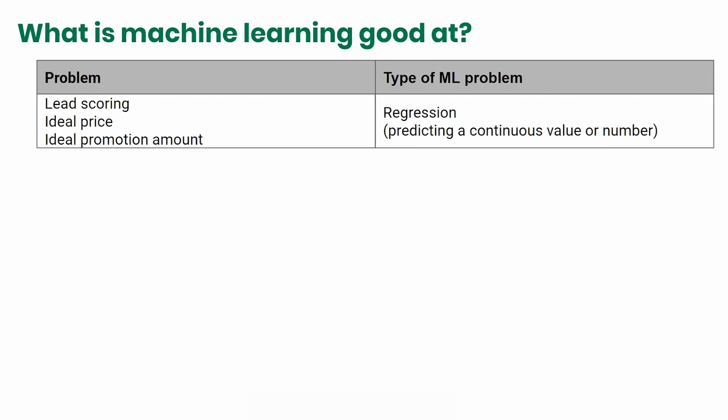Let's begin. If you're trying to score a lead from 1 to 10 in every value in between, or figure out the ideal price to sell a product at, or the ideal promotional amount to use, you'll use regression. It's the most popular form of machine learning out there.